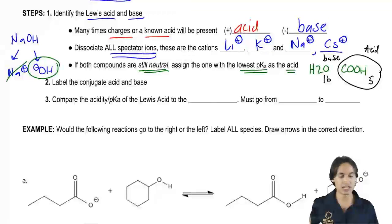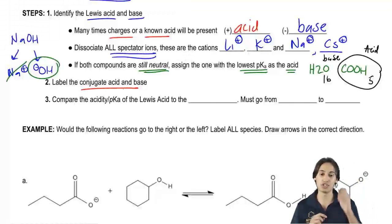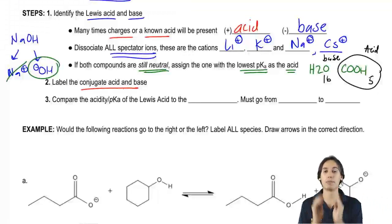The next step is now that you know what your acid and your base are, go ahead and label the conjugates. That means draw them out if you have to draw them or just label them based on which one is the acid. That one becomes the conjugate base.